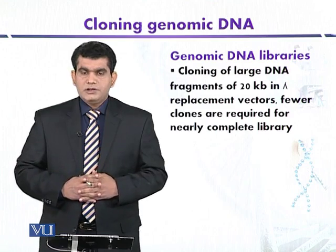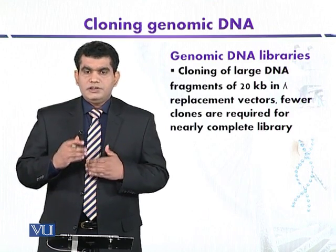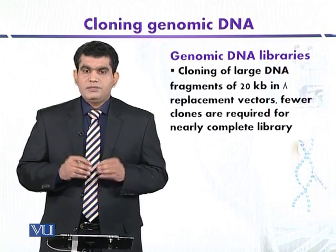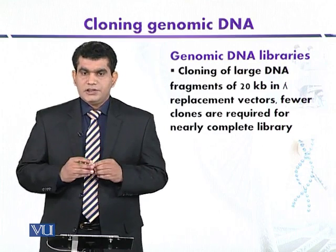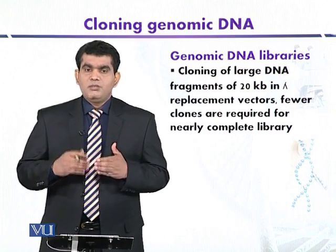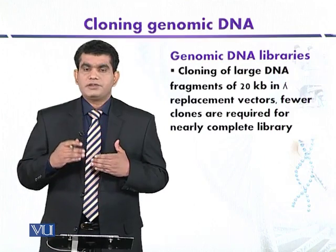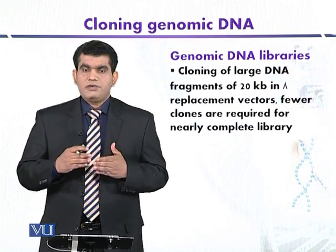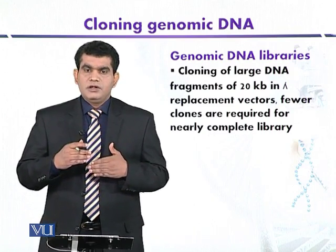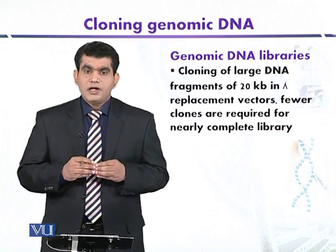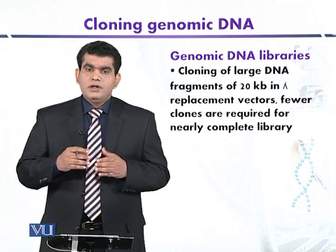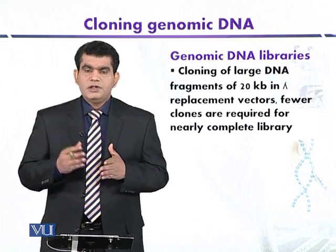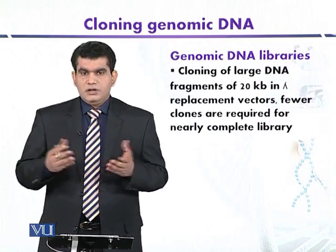If we attempt the above strategy to screen a particular gene from the complex human genome, we face different problems. The first problem is that if the gene is large in size, it may contain more than one target site for a restriction endonuclease like EcoRI. In this case, our gene of interest may be obtained in two or more fragments, which are not suitable for cloning.